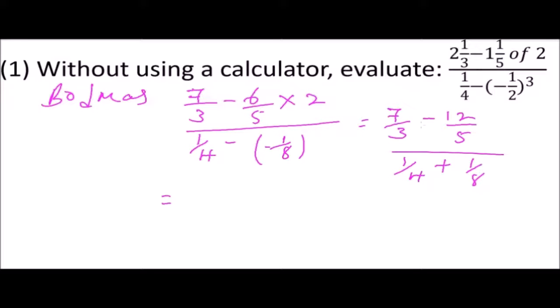From there, we get the LCM of 3 and 5, that is 15. So this is 15 divided by 3 is 5, multiplied by 7 is 35. Then we have minus 15 divided by 5 is 3, multiplied by 12, that will give you 36.